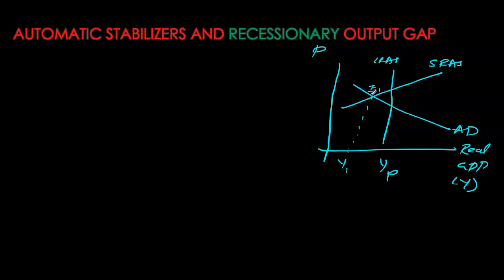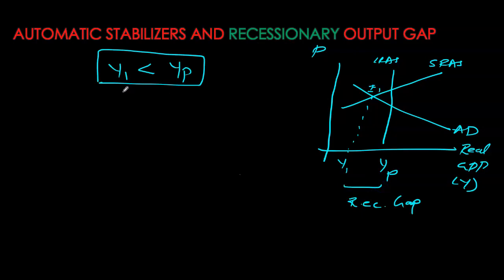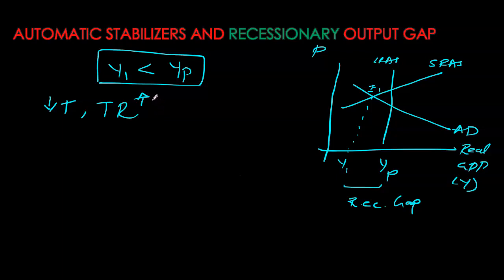We can similarly look at a recessionary output gap. In the diagram, we are at equilibrium one — a short-run equilibrium — where real GDP is below potential, reflecting a recessionary output gap. Whenever GDP is below potential, taxes automatically go down because people are earning less income and therefore paying less tax. At the same time, with lower income or a recession in place, more people become eligible for government handouts, so transfers increase and unemployment insurance claims rise.